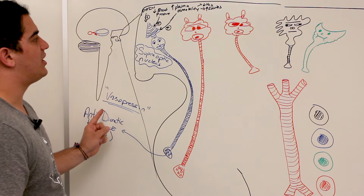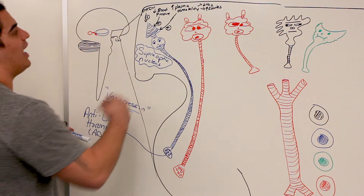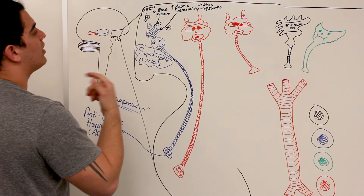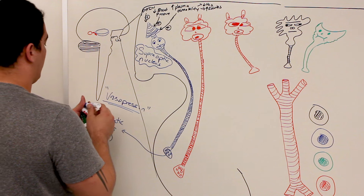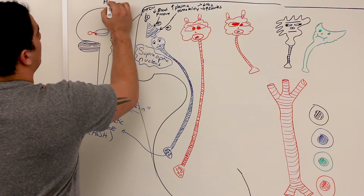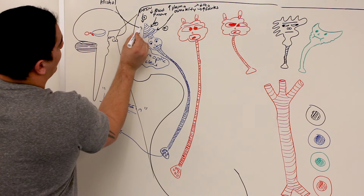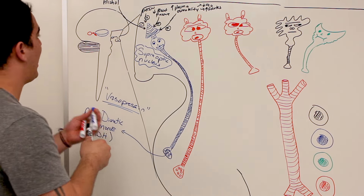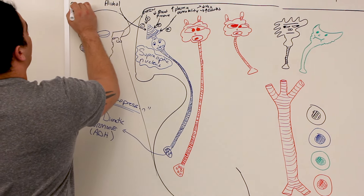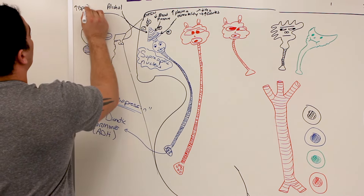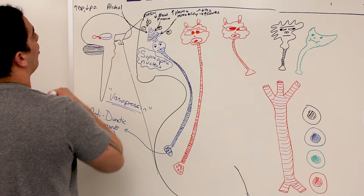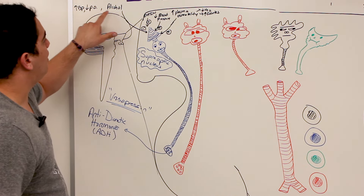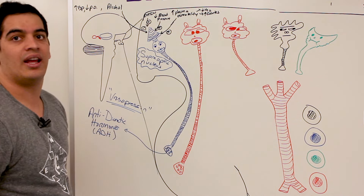What can inhibit ADH release? The opposite effects: high blood pressure and low plasma osmolality. Another very significant inhibitor is alcohol — alcohol has an inhibitory effect on ADH. So high blood pressure, low plasma osmolality, and alcohol are strong inhibitors of antidiuretic hormone.